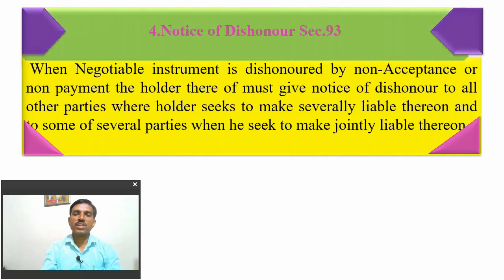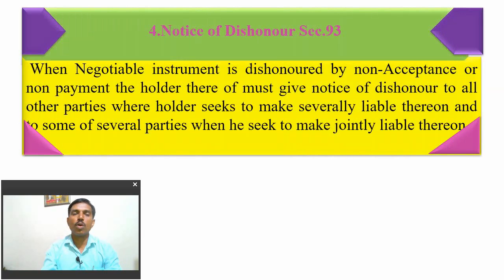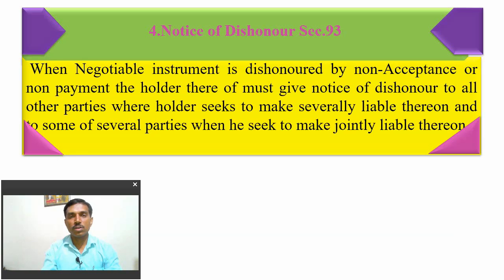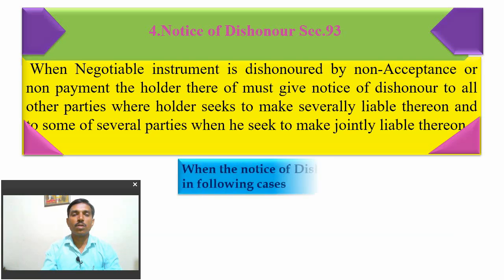Notice of dishonor under Section 93: when a negotiable instrument is dishonored by non-acceptance or non-payment, the holder must give notice of dishonor to all parties where the holder seeks to make them severally liable, and to some parties when seeking to make them jointly liable. Whenever there is joint liability of two or more parties, it is necessary to give notice of dishonor. Whether dishonored by non-acceptance or non-payment, notice must be given to all concerned parties.